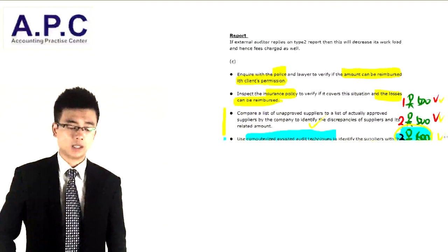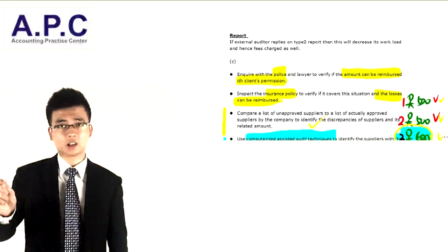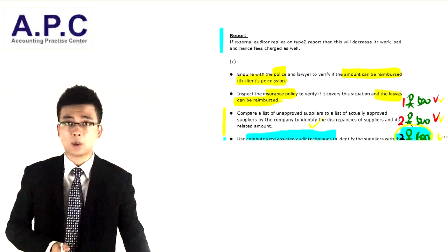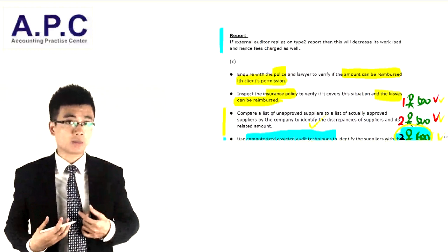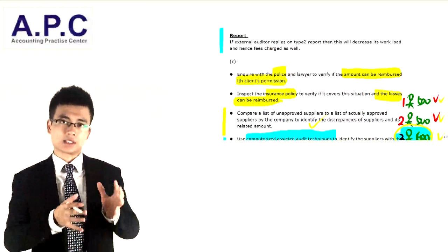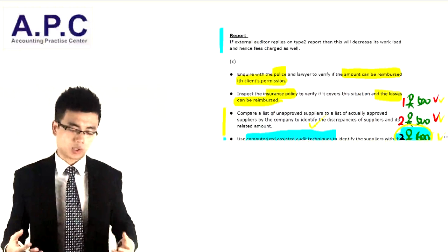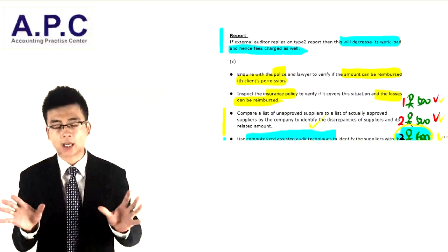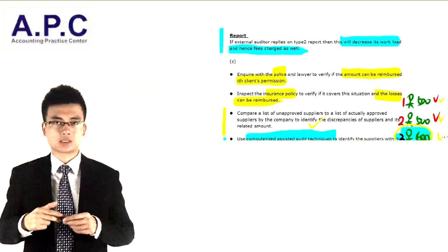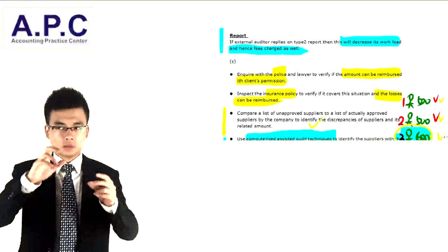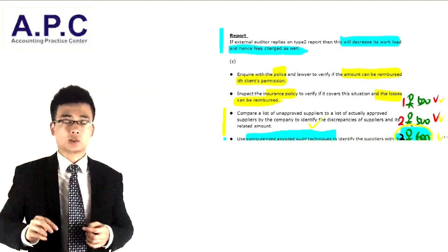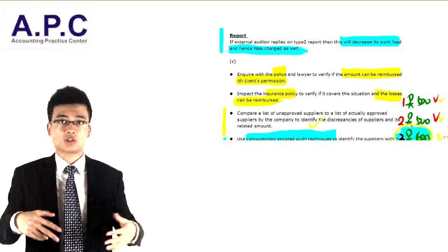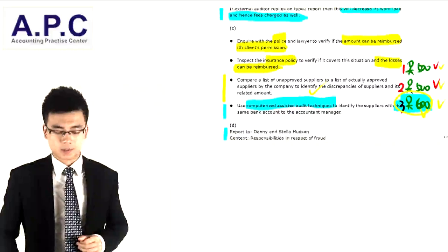Finally, if the external auditor relies on Type 2 reports produced by our internal audit firm — where the client has outsourced its internal audit function to us — this will decrease the workload and fees. A Type 1 report describes the internal audit systems, while a Type 2 report also assesses whether those systems are efficient and effective.